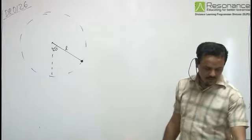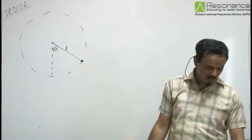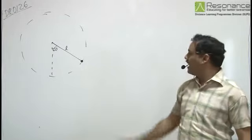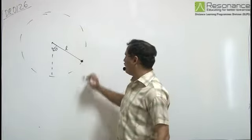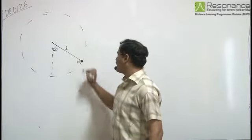In this problem, a small heavy block is attached to the lower end of a light rod of length L. We have a light rod of length L, and here we have a heavy block. Let us assume